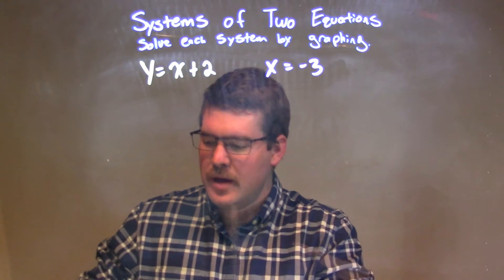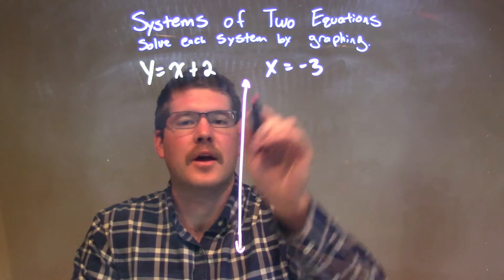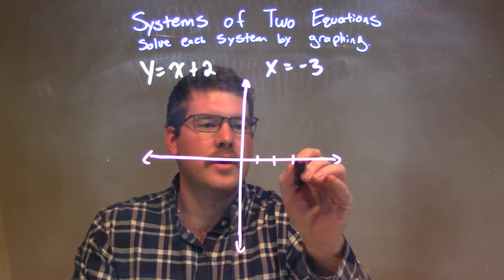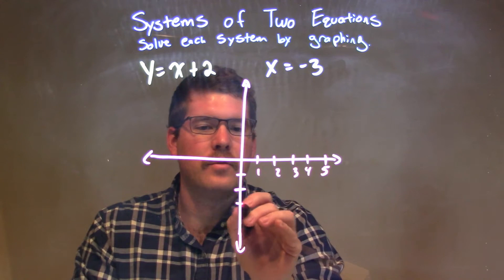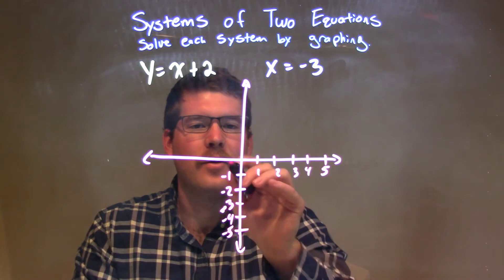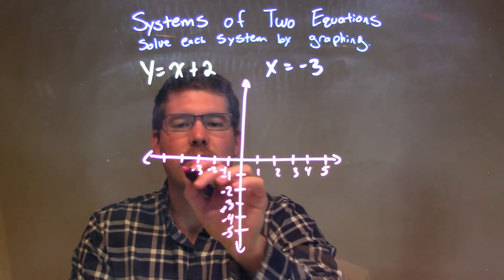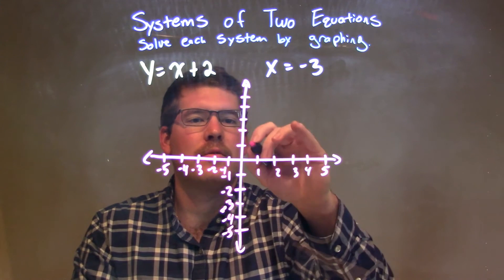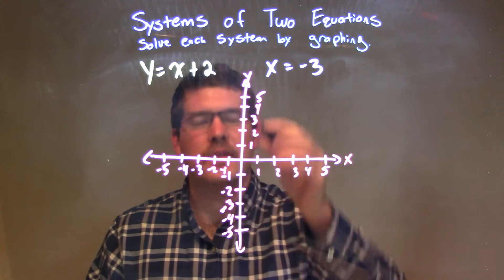The first thing I want to do is make a graph. We can't graph it until we have a graph. We're going to be careful and try to make everything as even as possible. So I'll mark out 1, 2, 3, 4, 5 on each axis, and label our x and y-axes.